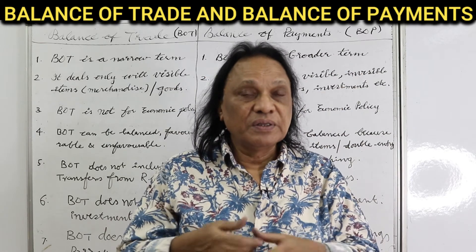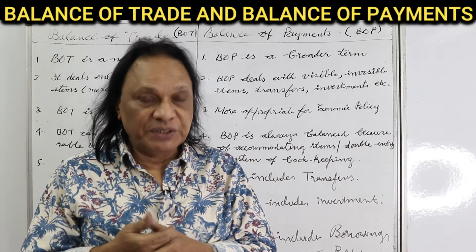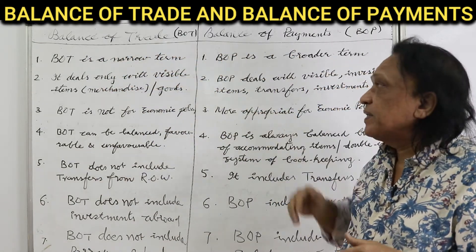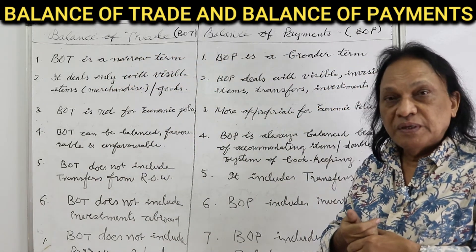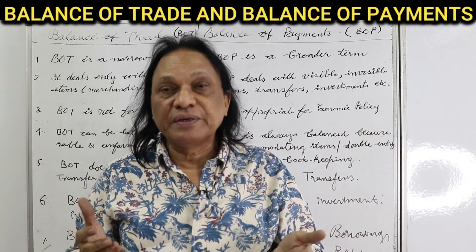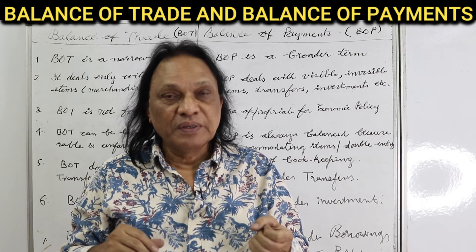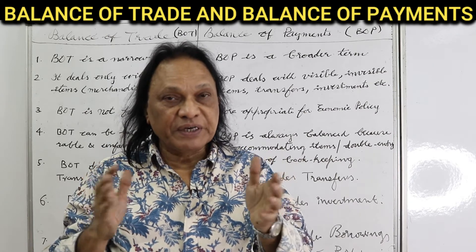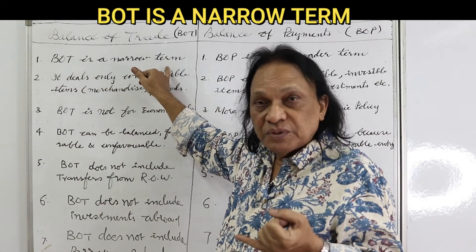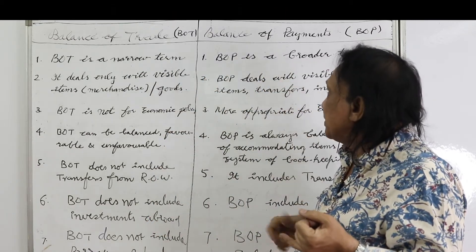Now today, in conclusion, we learn the difference between balance of trade and balance of payments. See here the difference between balance of trade and balance of payment. Follow it carefully — it covers up the whole unit, covering both BOT and BOP chapters. The first point: BOT is a narrow term, a very small term. And BOP, or balance of payment, is a broader term.